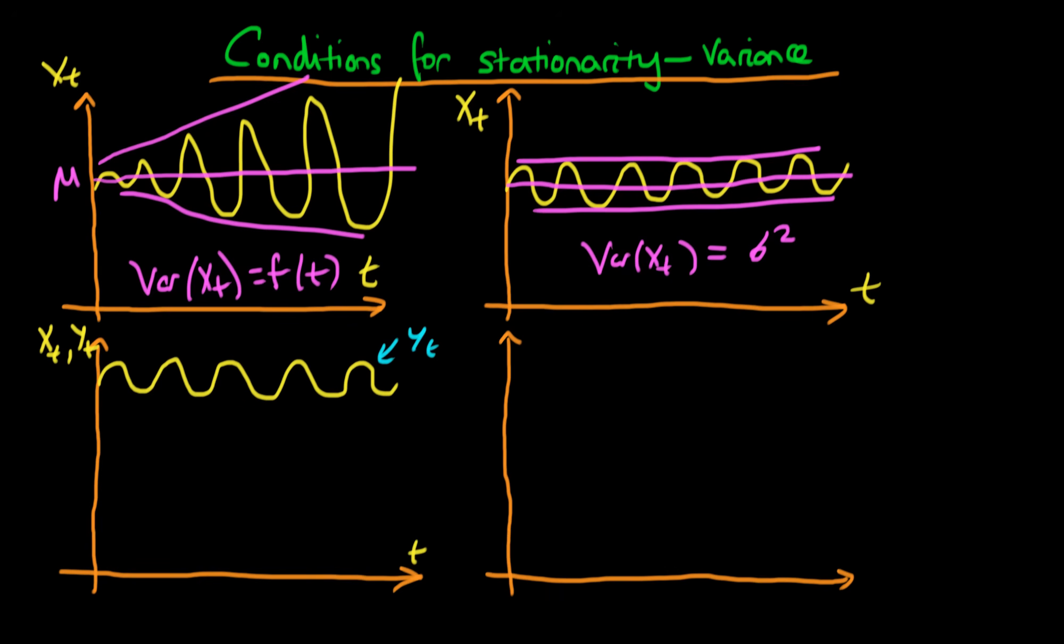Whereas perhaps my xt isn't itself variance stationary. My xt does something like that. It's quite obvious the way I've drawn this, just like the example above, that my xt here is itself variance non-stationary.